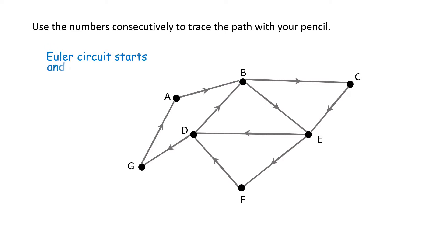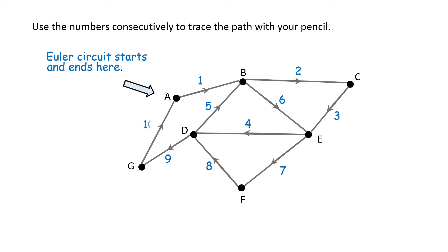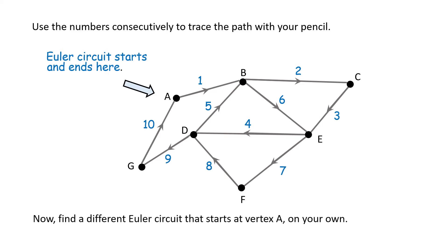We'll go from A to B, that's 1. From B to C, 2. From C to E, 3. From E to D, that's 4. From D to B, that's 5. From B we'll traverse to E, that's 6. From E we'll go to F, that's 7. From F we'll travel to D, that's 8. From D we'll go to G, that's 9. We'll go back to A — we complete the circuit with the 10th step. Now find a different Euler circuit that starts at vertex A on your own.